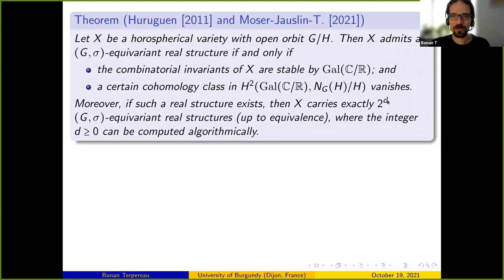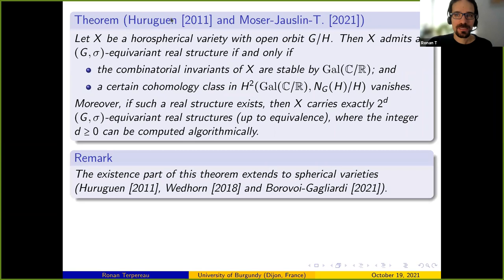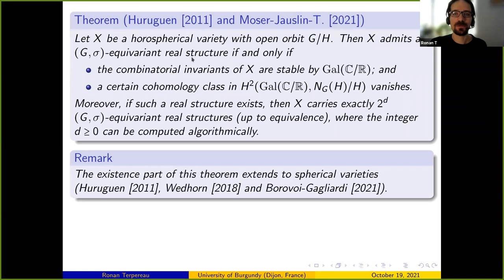A couple of months after our article was released on the arXiv in 2018, Borovoy and Gagliardi — using the work of Huruguen and Wedhorn — generalized the existence part of our theorem to the case where X is a spherical variety over any base field of characteristic zero. They don't generalize the second part (counting), which is more tricky over arbitrary fields, but over characteristic zero they get the exact same criterion.